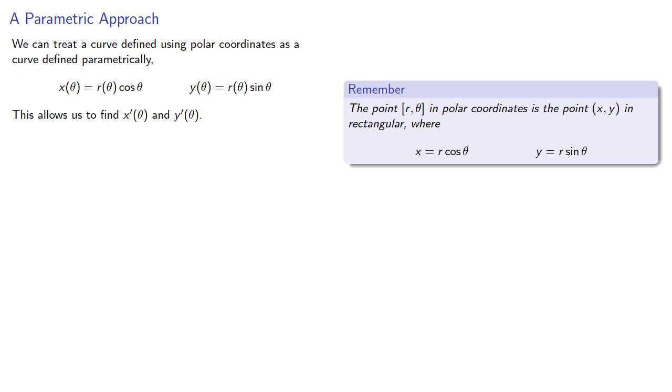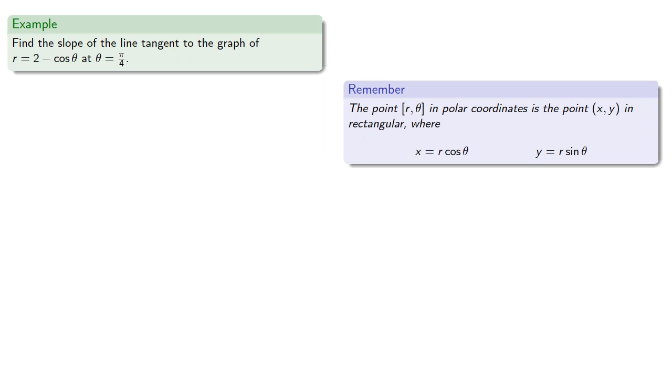And we can find dy dx as the quotient which will give us the slope of the tangent line. At this point things get messy. So we have y equals r sine theta. So y of theta is r, that's 2 minus cosine theta, times sine theta. We can differentiate. And at pi fourths we find...